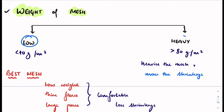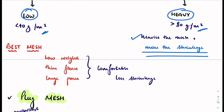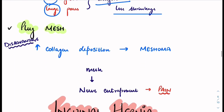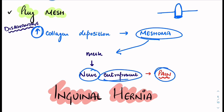Regarding mesh weight: less than 40 g/m² is low weight; more than 80 g/m² is heavy weight. Heavier mesh means more shrinkage. Therefore, the ideal mesh has low weight, thin fibers, and large pores — this is comfortable with less shrinkage. Another type is plug mesh, which is plugged into the defect. Its disadvantage is increased collagen deposition causing meshoma, which can lead to nerve entrapment and pain.